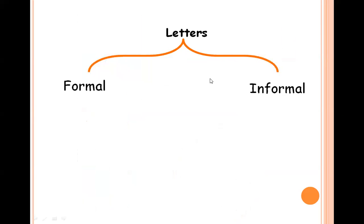Letters are divided into two parts: formal and informal. Informal letters are those we write to relatives and friends, and the style and tone of writing is also very informal. When writing formal letters, the tone and style is also formal and objective, and the purpose should be clearly stated.